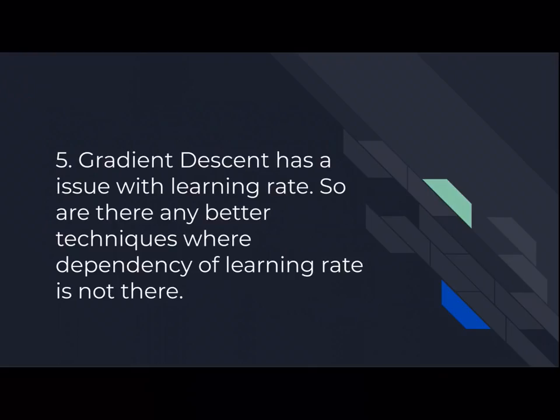Gradient descent is a very important concept, but it has one issue with the learning rate — the learning rate is not derived from the data, so we have to manually adjust it. Are there any better techniques where dependency on the learning rate is removed? For example, you might suggest Newton's method.